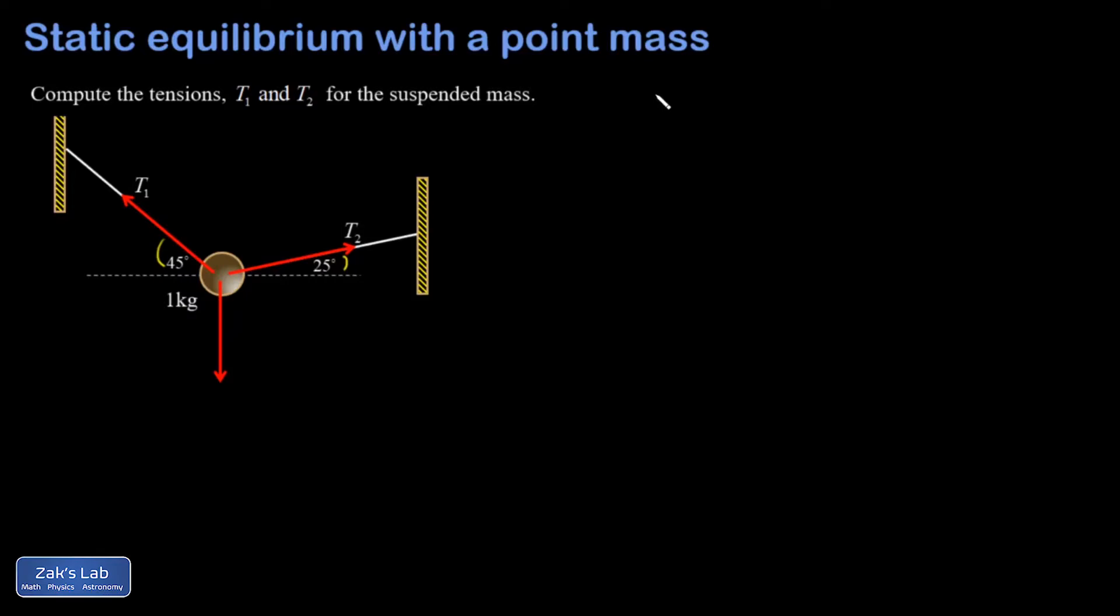If we want to investigate equilibrium, we just say the net force better be zero, and that means in the x direction and y direction independently. So the sum of all the forces horizontally better be zero, otherwise it would accelerate horizontally. The sum of all the forces vertically better be zero, otherwise it would accelerate vertically.